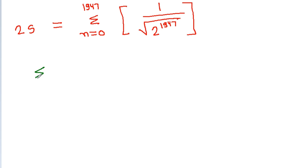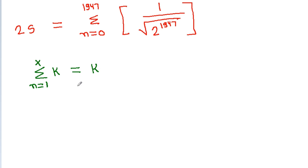Now, the summation from n equals 0 to a of any constant k equals k times the number of terms. Similarly, the summation from n equals 0 to x of a constant k equals k times (x plus 1).